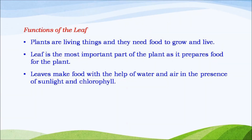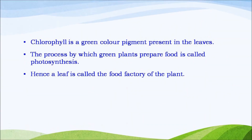Plants are living things and they need food to grow and live. Leaf is the most important part of the plant as it prepares food for the plant. Leaves make food with the help of water and air in the presence of sunlight and chlorophyll. Chlorophyll is a green color pigment present in the leaves. The process by which green plants prepare food is called photosynthesis. Hence, a leaf is called the food factory of the plant.